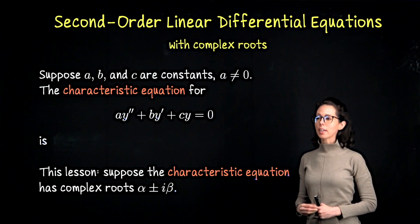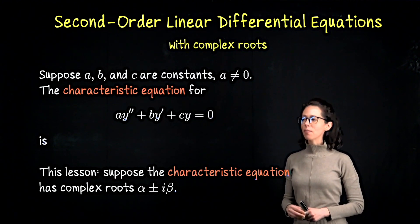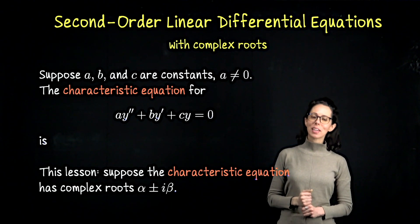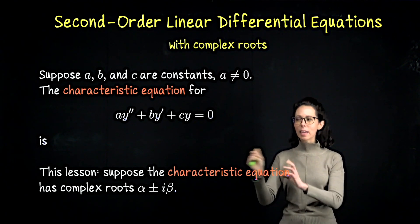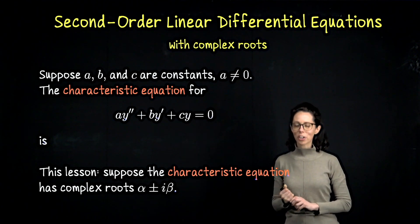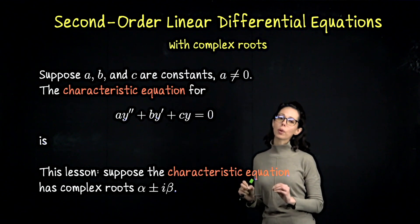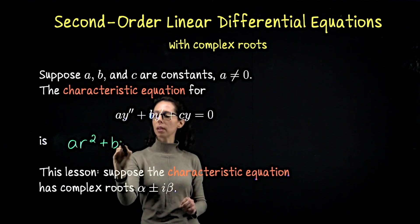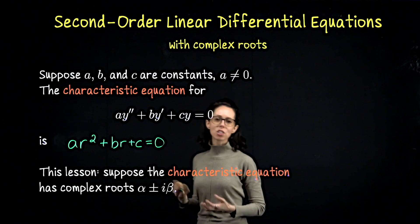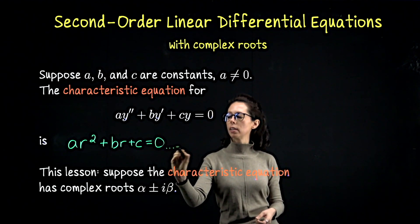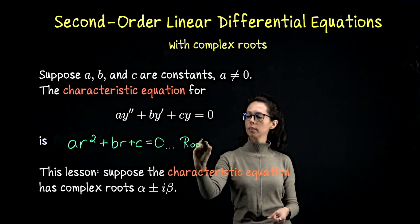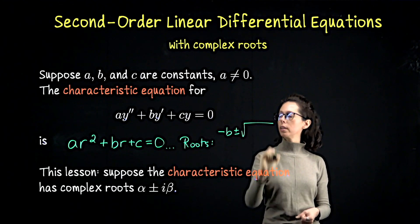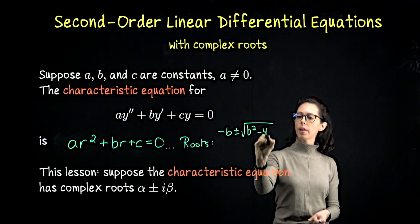In the three previous videos, we were studying second-order linear differential equations of the form ay'' + by' + cy = 0, where a, b, and c are just constant coefficients with a not zero. Any time you see this kind of homogeneous second-order linear differential equation with constant coefficients, you want to immediately write down your characteristic or auxiliary equation, which has the form ar² + br + c = 0. The solutions have the form negative b plus or minus the square root of b² minus 4ac, divided by 2a.